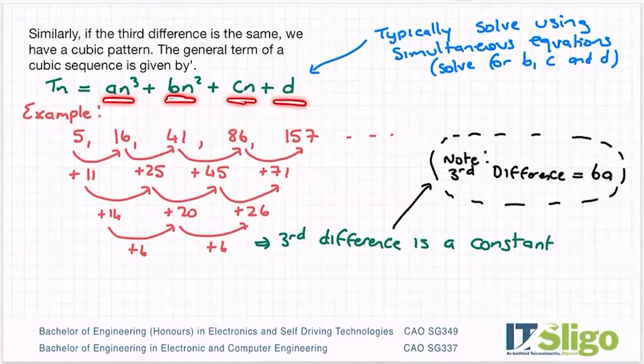The general term is given by an³ + bn² + cn + d. It does follow the pattern—no pun intended—of a cubic function. A cubic function is given by ax³ + bx² + cx + d. So again, the n's and the x's have just traded places.